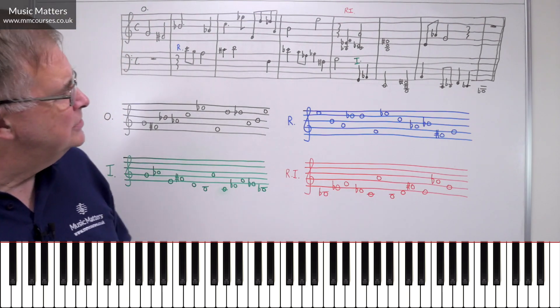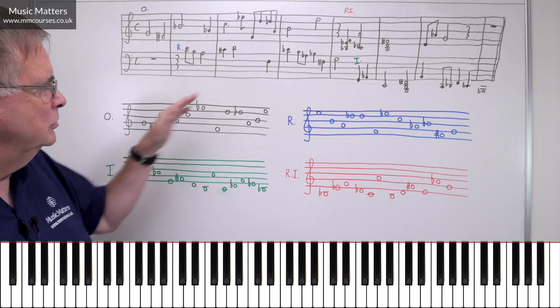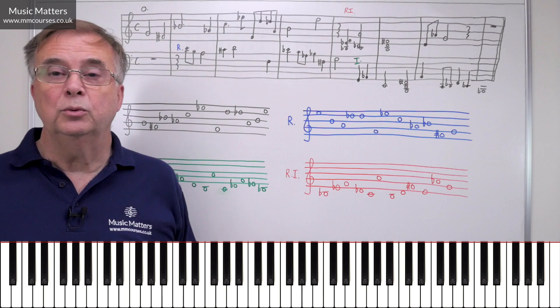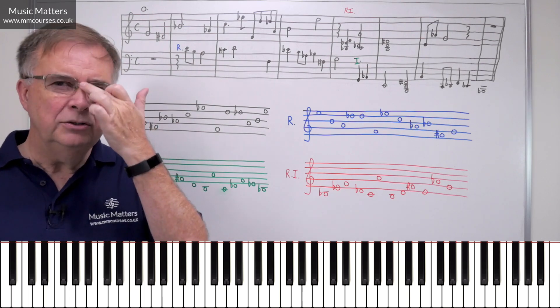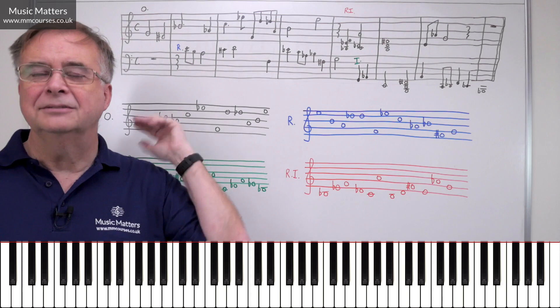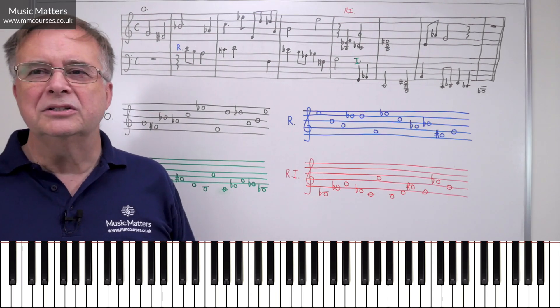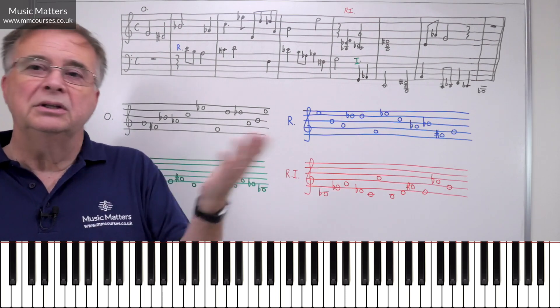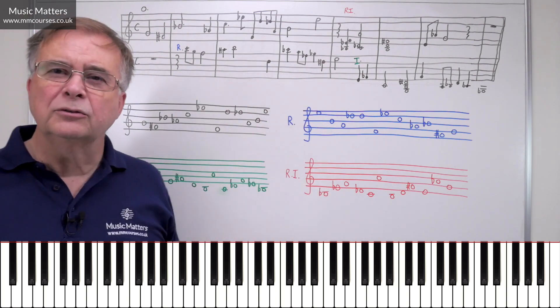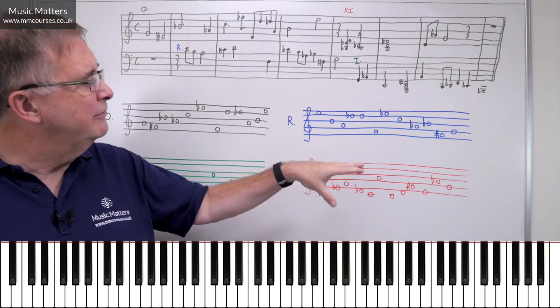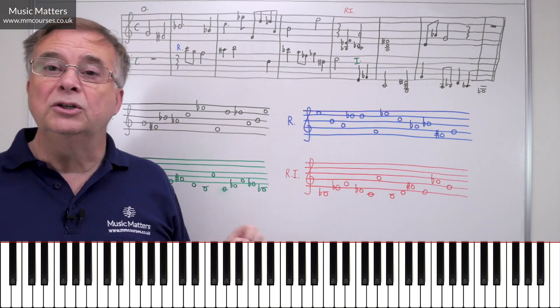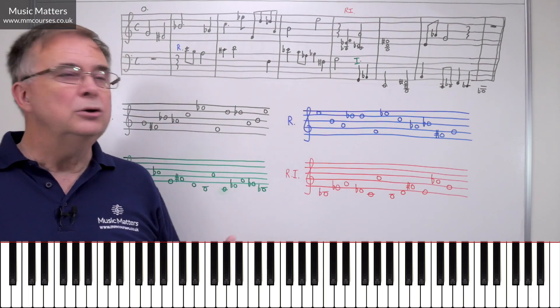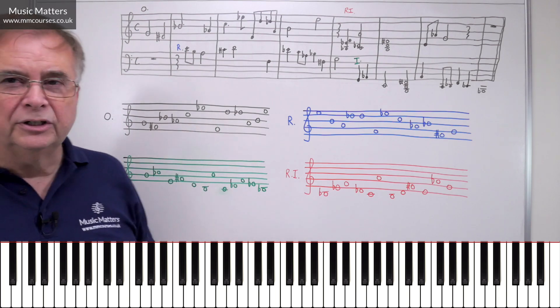Now the idea then is that you write your piece using original, retrograde, inversion, and retrograde inversion in any way that you want to, in any combination. But you don't use notes that are outside of that. Of course, as serialism progressed, some composers became more strict with it, some became less strict with it. But at the moment, we're going to work on the original Schoenberg principle. So you don't have any note that doesn't belong to one of these. You can transpose these, any four of these, any way you want to. But basically, you're using these four versions.